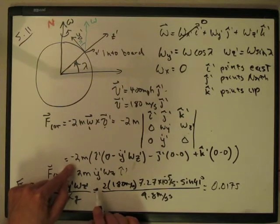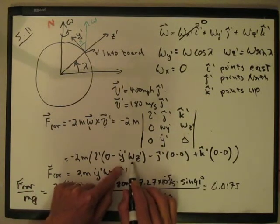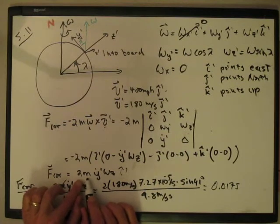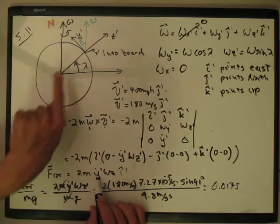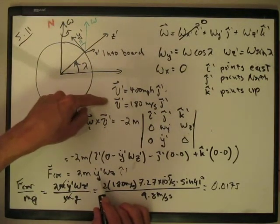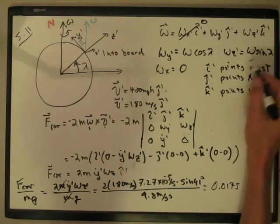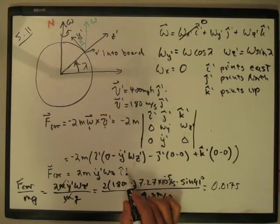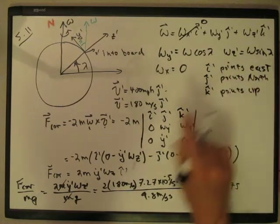Both the j hat and the k hat prime terms come out to zero. And so the minus signs cancel. You should be able to work this cross product out and get this result. And so this gives me 2m y dot prime. This is the velocity in the y prime direction. That's the 180 meters per second. The omega z is omega sine lambda. And the i hat prime is just the eastward direction. It's east.